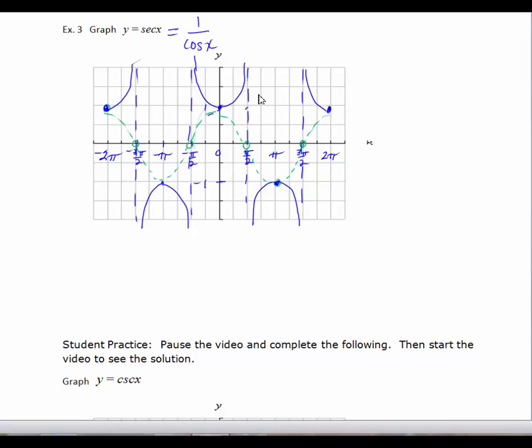Now the period here, you can see that the cycle now is going to be one upside down u, and then an upside down u. So the period for secant and cosecant is also going to be 2π.